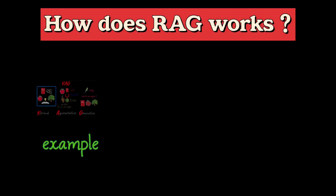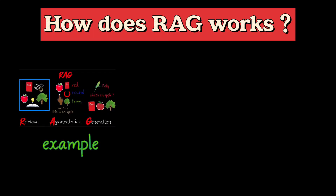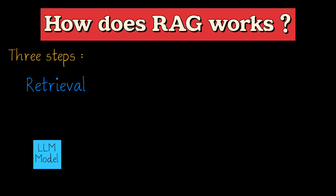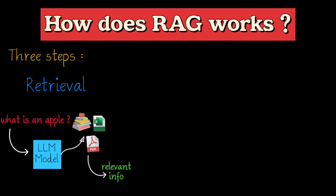Now let's understand how RAG works. As we saw in the example, RAG works in three steps. First, retrieval: when an LLM encounters a question, RAG goes on a knowledge hunt, searching external sources for relevant information.